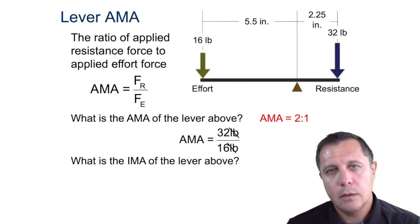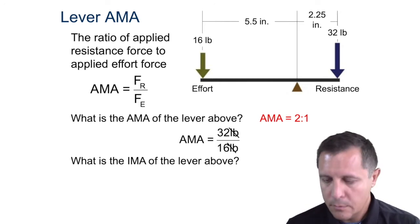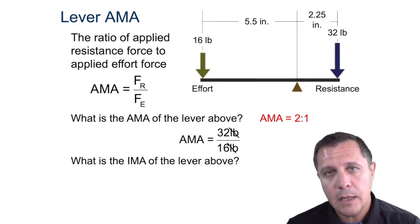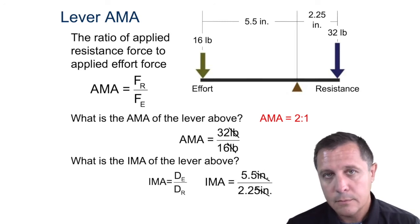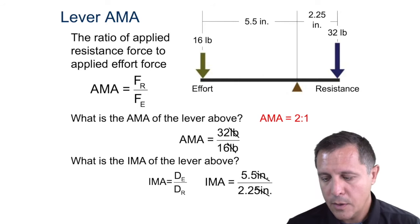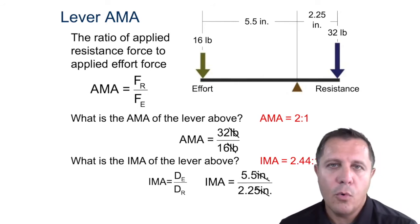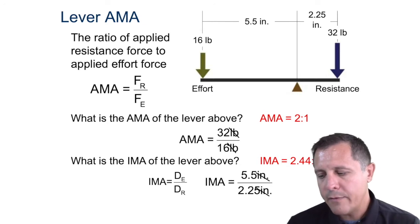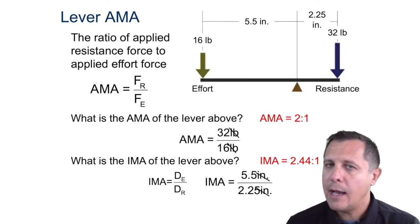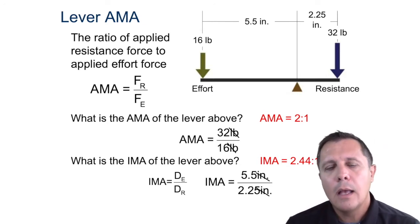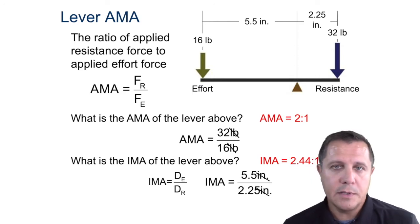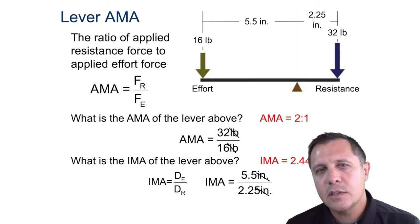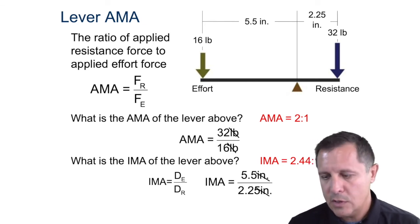What about the IMA? Pause here and see if you can get the calculation. We get 2.44. This leads into efficiency — if the IMA and the AMA are not the same, that's because it's not 100% efficient, and really nothing is. In another video, we're going to talk about efficiency.